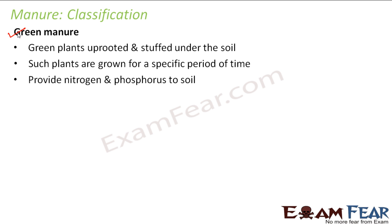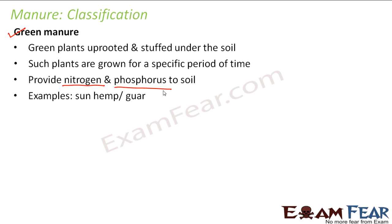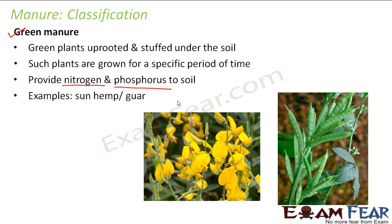Green manure mainly provides nitrogen and phosphorus to the soil. Both nitrogen and phosphorus fall under the category of macronutrients, meaning plants need these nutrients in large amounts. Some examples of green manure plants are sun hemp and guar. These are plants generally planted with the purpose of making green manure. Guar is something you would likely have seen in vegetable markets — it looks a little similar to beans but is a little flatter. These kinds of plants help in becoming good manure for the soil.